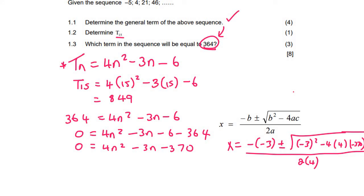And so we get n is 10, or n equals negative 9.25. But that is no solution because n cannot be negative, because n is the position. So you say therefore n equals 10. That is the final answer.